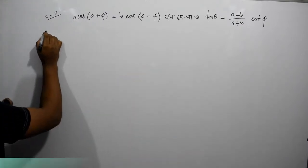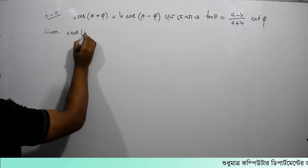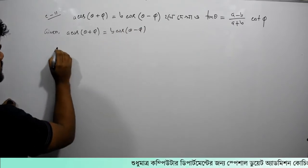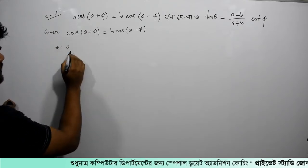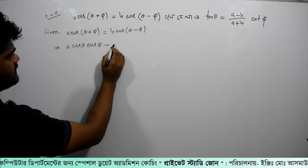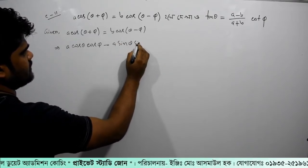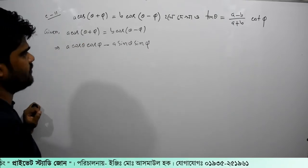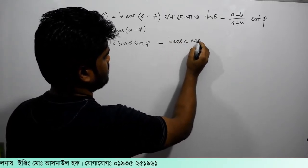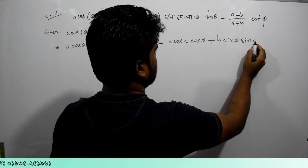So given data, I will start to calculate. Given a cos theta plus phi... cos phi plus b sin theta sin phi.